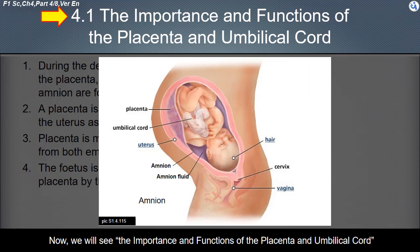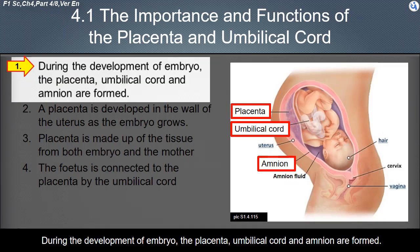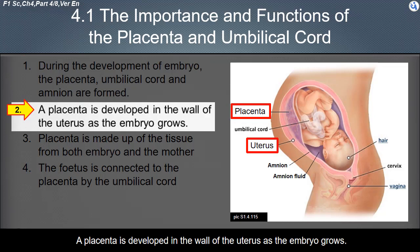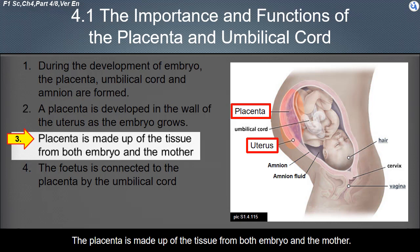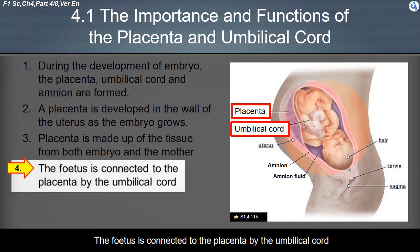Now we will see the importance and functions of the placenta and umbilical cord. During the development of the embryo, the placenta, umbilical cord, and amnion are formed. A placenta is developed in the wall of the uterus as the embryo grows. The placenta is made up of tissue from both the embryo and the mother. The fetus is connected to the placenta by the umbilical cord.